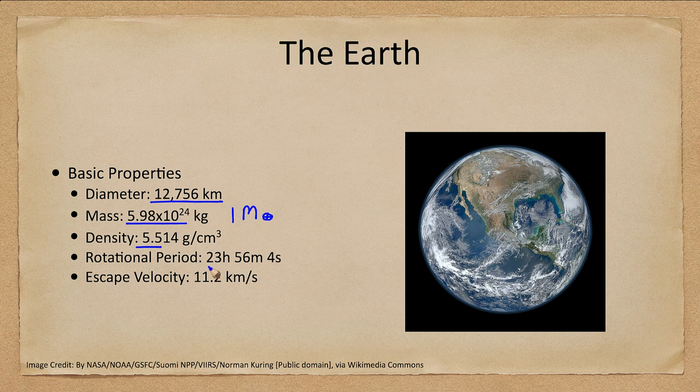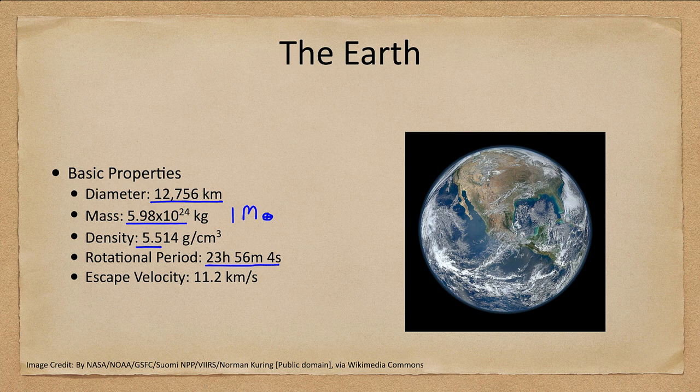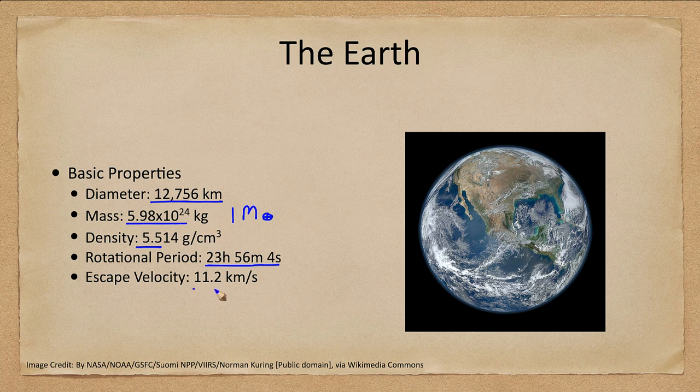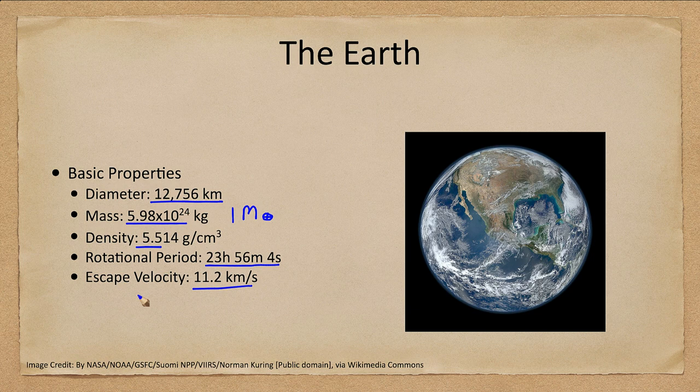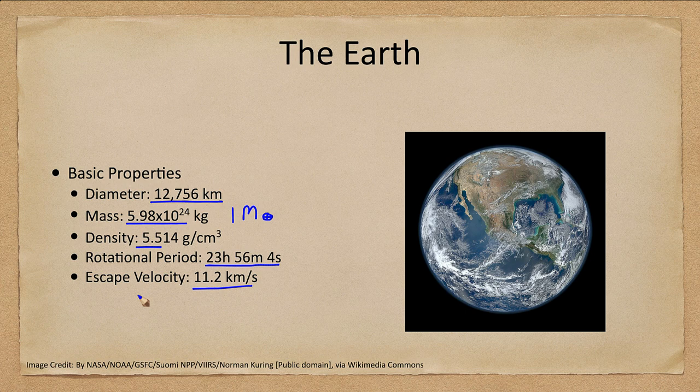Its rotational period, 23 hours and 56 minutes. And recall that is the sidereal rotation period. How long it actually takes Earth to rotate. Our day is 24 hours based on the sun. And it has an escape velocity of 11 kilometers per second. So without an atmosphere, if you could send something up at 11.2 kilometers per second, it would be able to escape from Earth's gravitational well and head out into interplanetary space.